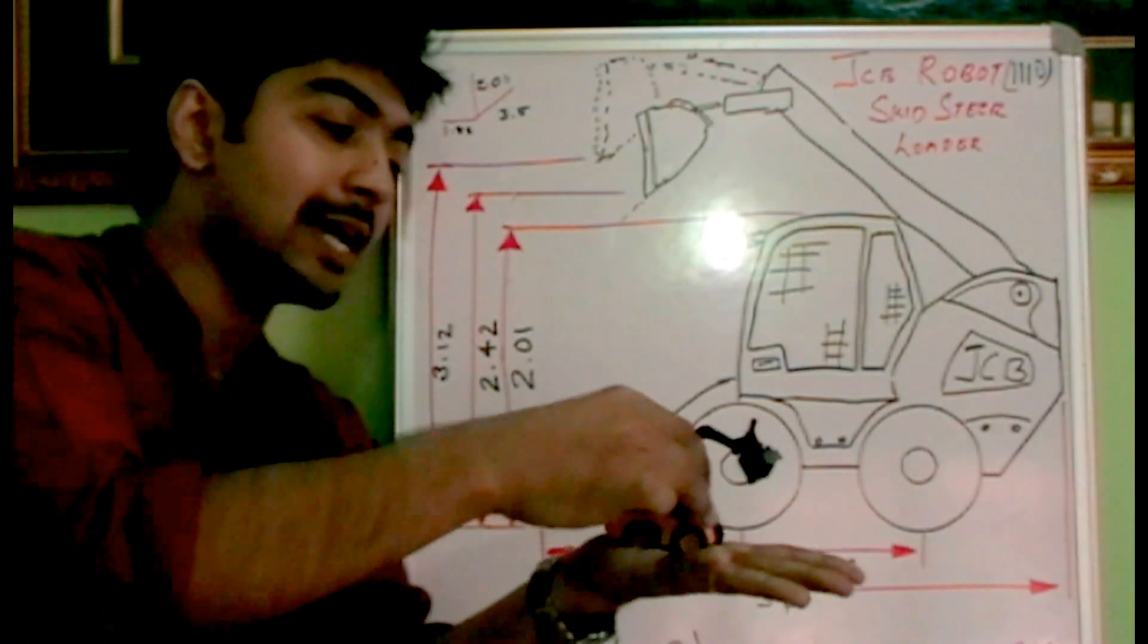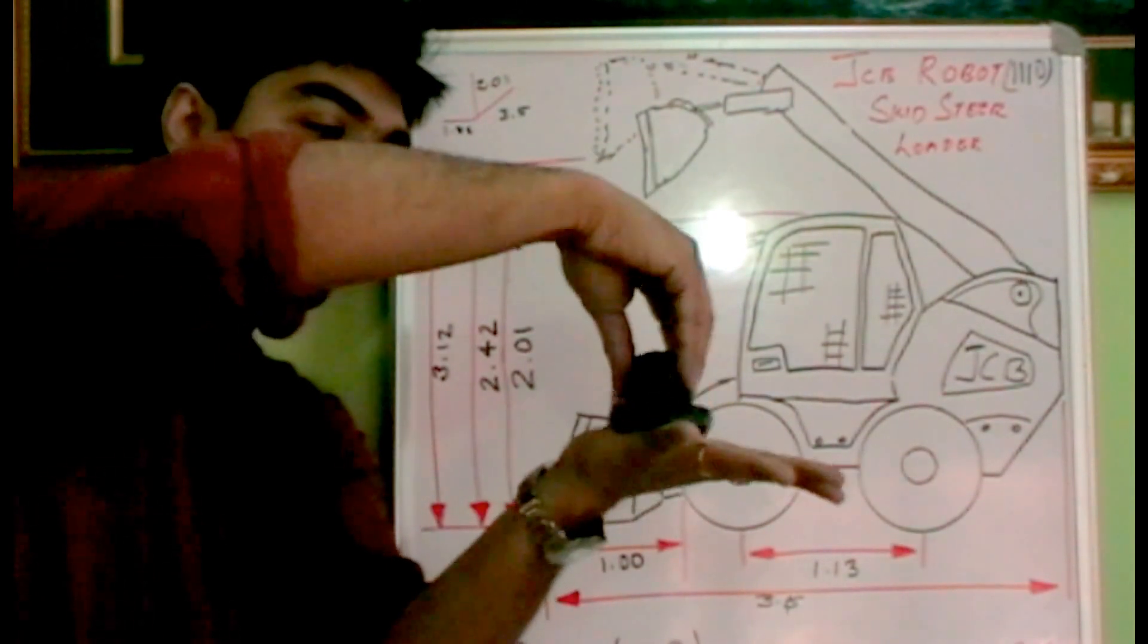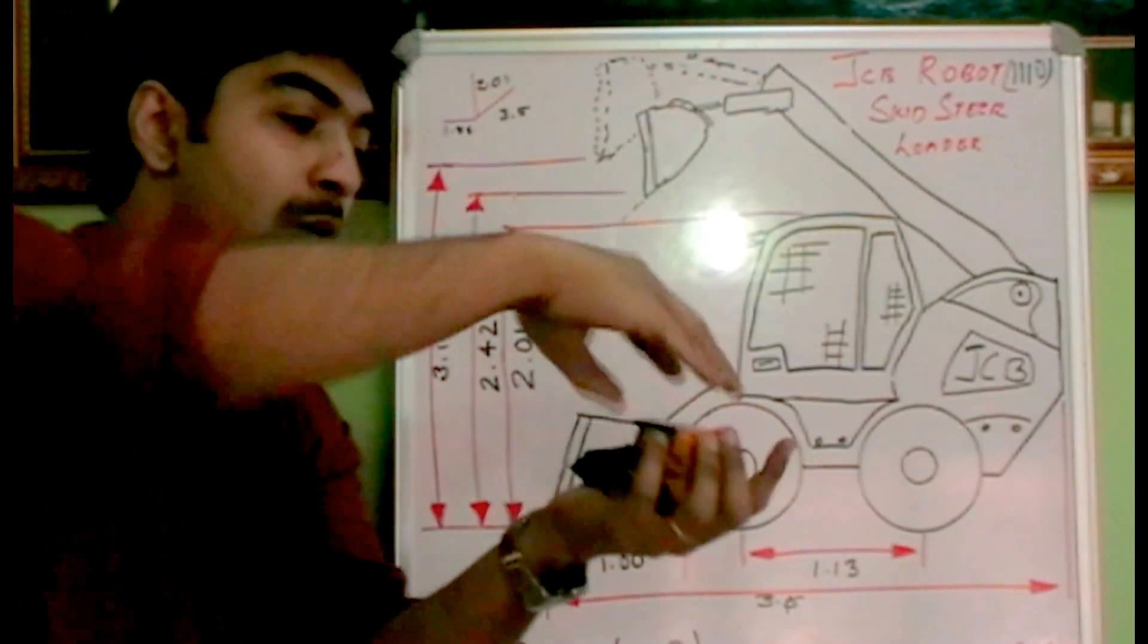So it can actually skid like this and can turn like this. You can see what is happening over here. This is exactly what this machine is capable of doing. It can skid and steer.